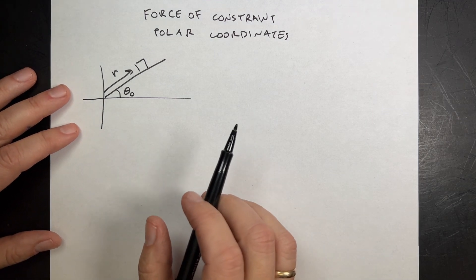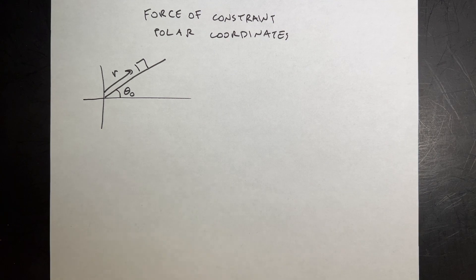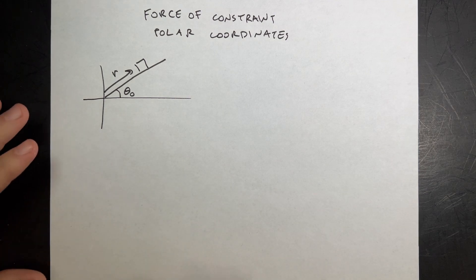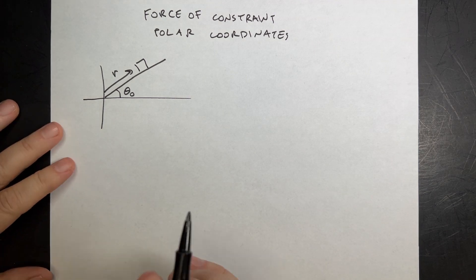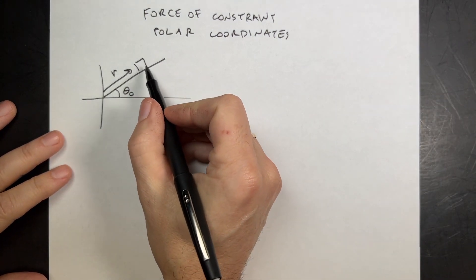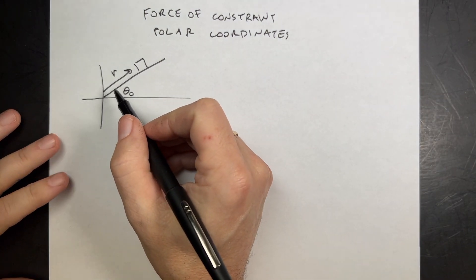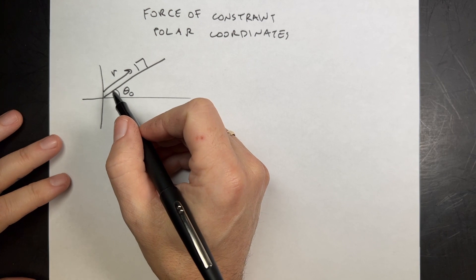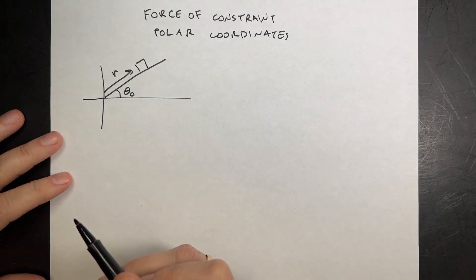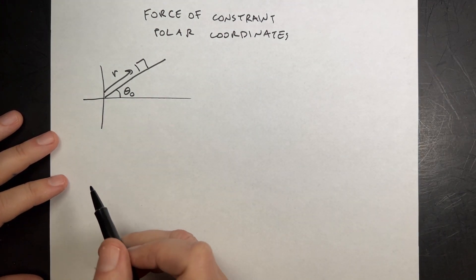In my previous couple videos, I was looking at forces of constraint in Lagrangian problems and finding the force of constraint. I did a problem of a block on an incline and found the force of constraint. But I thought, what if I did this again but used polar coordinates?